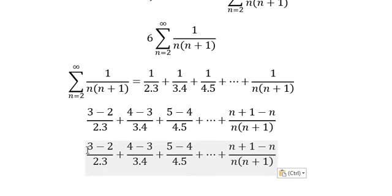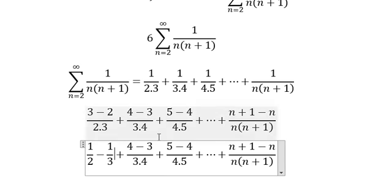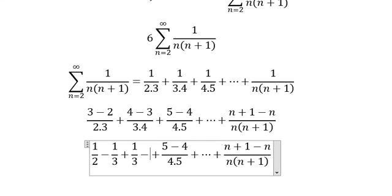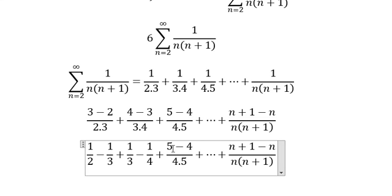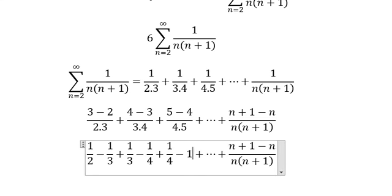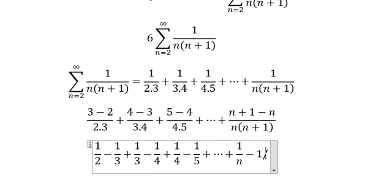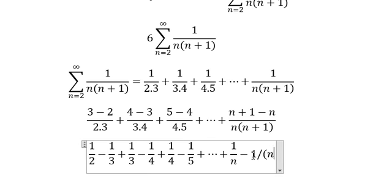We know that three divided by three, two divided by two, so you got about one over two minus one over three. Similar, this one one over three minus one over four, and this is about one over four minus one over five, and this one just like one over n minus one over n plus one.